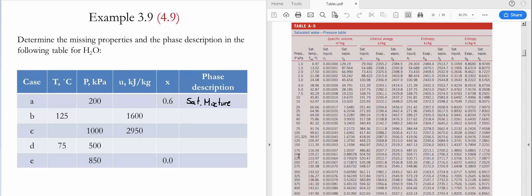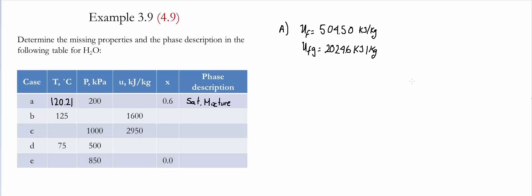Once we go to Table A5, we go to the pressure of 200 kilopascals and the saturated temperature is going to be 120.21. To find the value of internal energy, we're going to use the value of UF, which is 504.50, and the value of UFG, which is equal to 2024.6. We find the value of U using the formula UF plus quality times UFG. Substituting these values with quality equal to 0.6, we find that the value of the internal energy is 1719.26 kilojoules per kilogram.